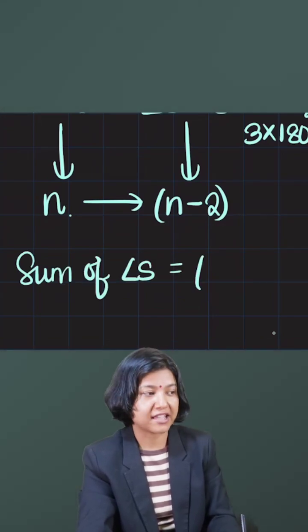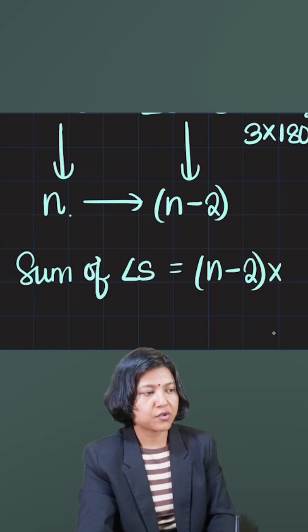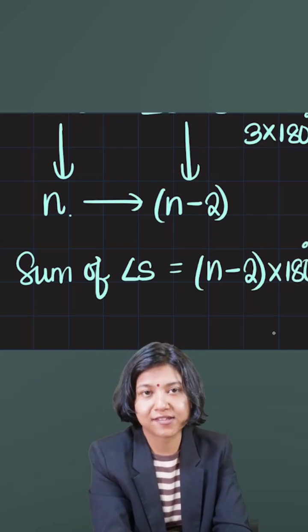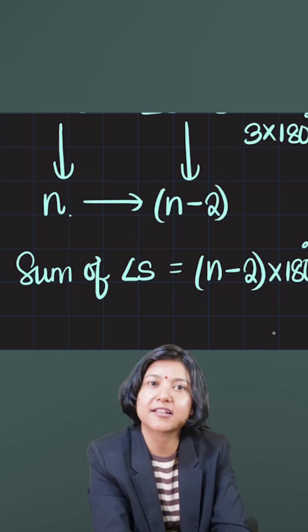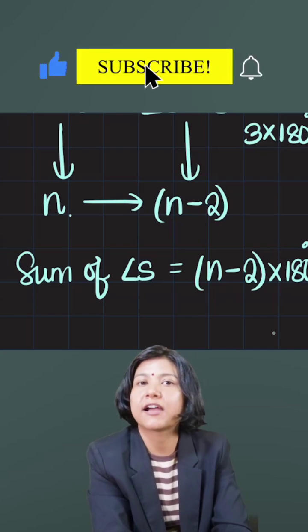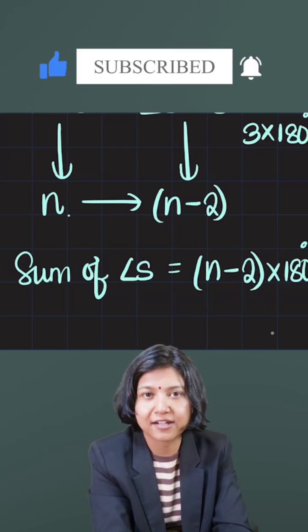So let's say if there are hundred sides, then all I have to do is just subtract two because that is the number of triangles formed, 98 times 180. That is how I would find the sum of angles in a hundred sided polygon.